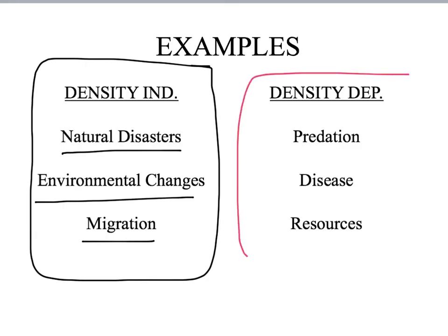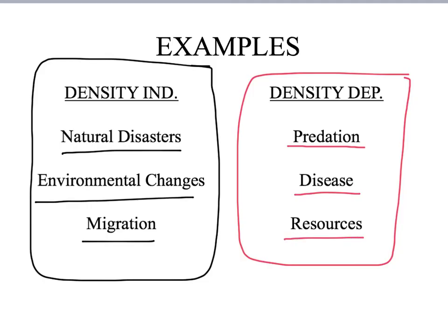The second type is density dependent factors, which have a bigger impact on larger populations. Predation is more likely to affect larger populations because more members get eaten. Disease spreads more easily in large populations because organisms live closely together — that's why flu outbreaks often start in bigger cities. Finally, resources like water or shelter run out more quickly for larger populations than smaller ones.